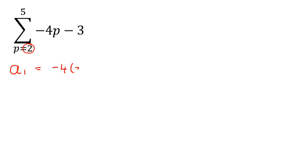So it's going to be minus four times two, take away three, which is negative 11. Then to find term number two, you're just going to add one to this number. So now we're going to be using a three,